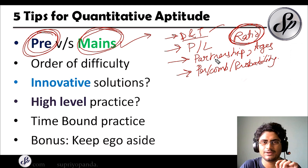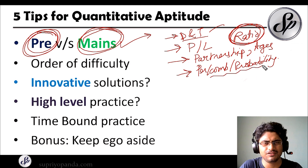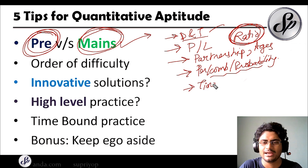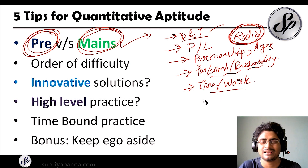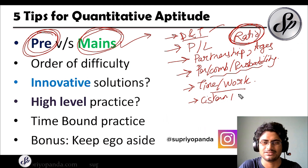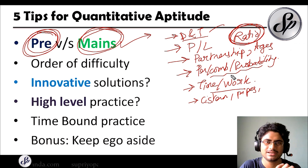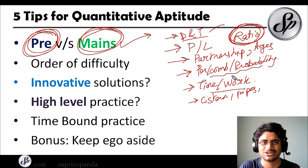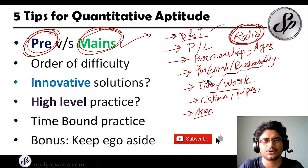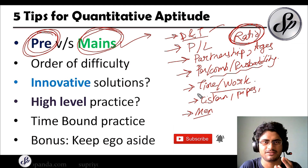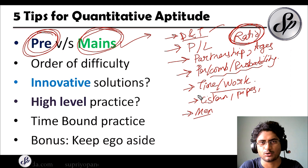I also used to do permutation and combination and probability questions, because the question pattern for these rarely changes — almost every time the same kind of pattern appears, which makes things easy. Then there's time and work — some questions can be very tricky, especially cistern questions and pipes and streams, so approach those with caution and only attempt them if you are good. Mensuration questions are also quite easy as long as you know the formula.